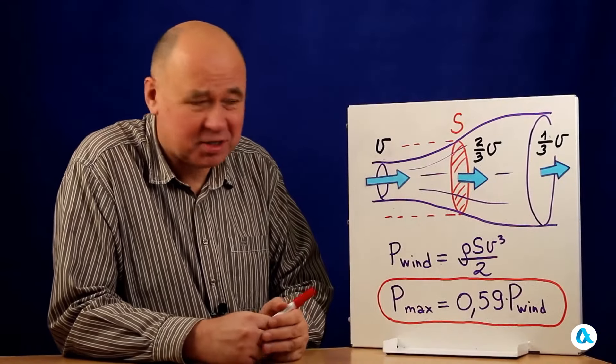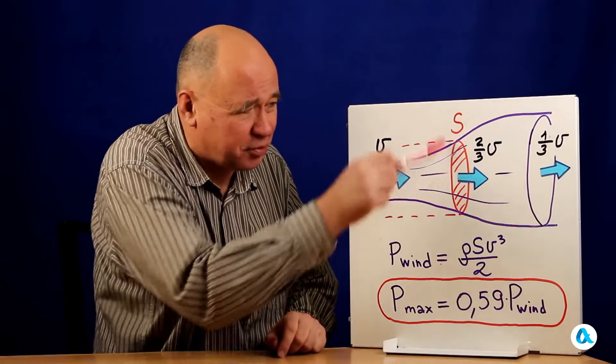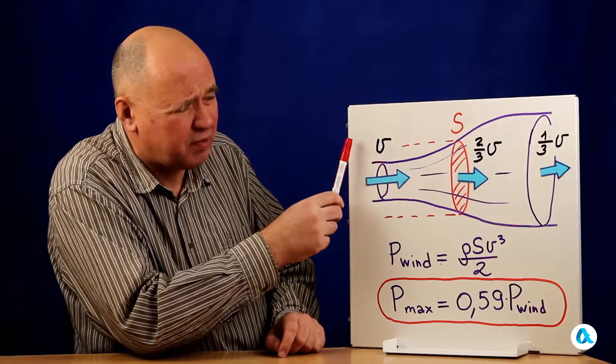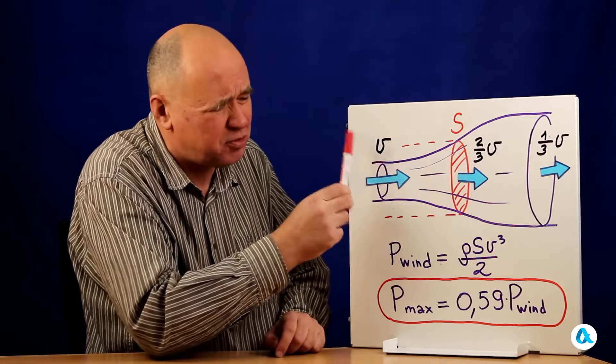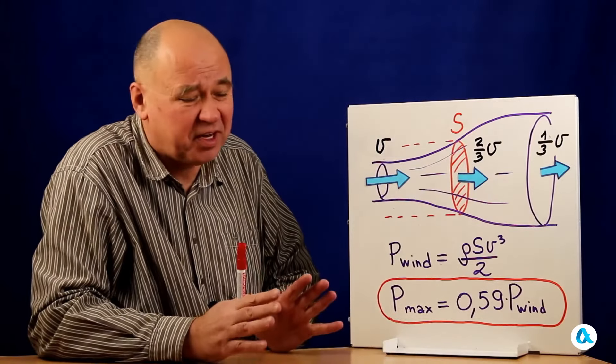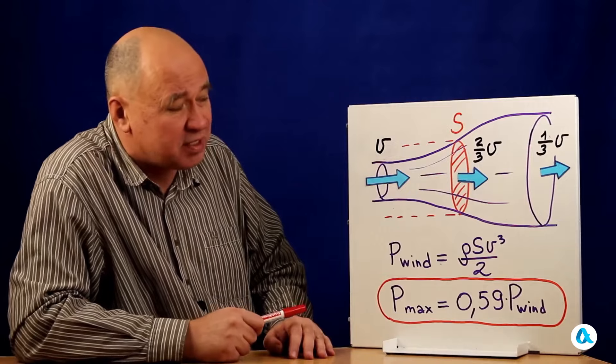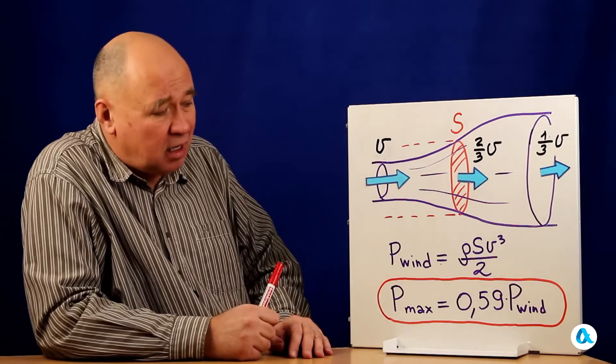And let me draw all of this again on our diagram. So here we have a wind turbine that sweeps an area s. Now it is convenient for me to relabel the speed like this. The air approaches with a speed of v. In the most efficient situation, the speed behind the wind turbine drops to 1 third of this speed. And at the wind turbine itself, it is 2 thirds.